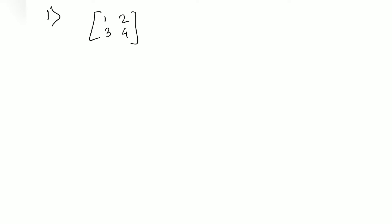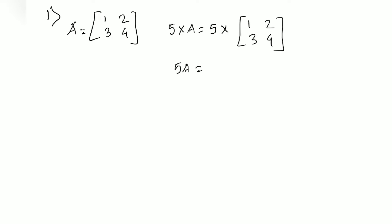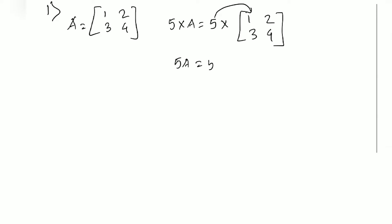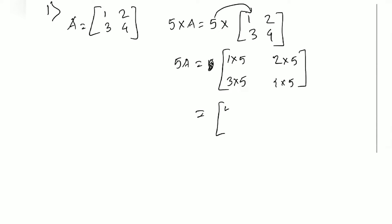Suppose you have a matrix A equal to [[1,2],[3,4]]. If we do scalar multiplication and multiply 5 with A, then we get 5 into [[1,2],[3,4]]. This 5 gets multiplied to each and every element inside the matrix: 1×5, 2×5, 3×5, and 4×5.